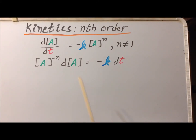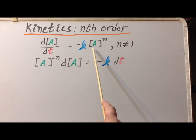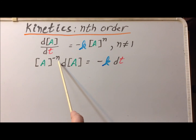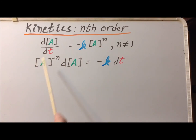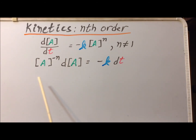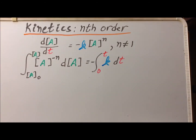As a first step, you multiply each side of the equation by dt, and then multiply each side of the equation by the concentration of A to the minus nth power. So often we write this as 1 over A to the nth, but it's going to be convenient to write it with a negative exponent in this case. Next, we integrate each side.